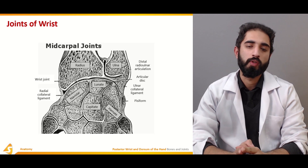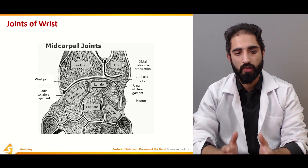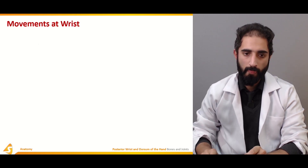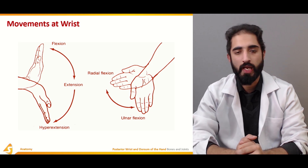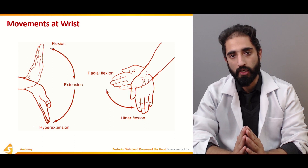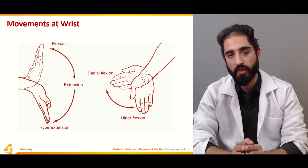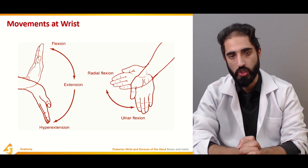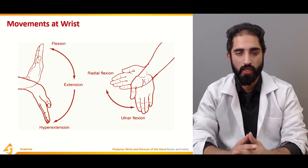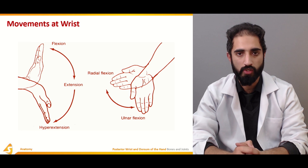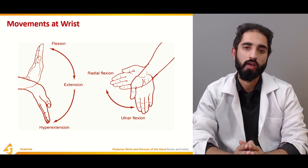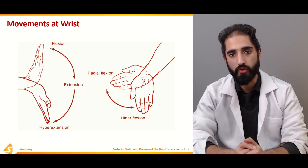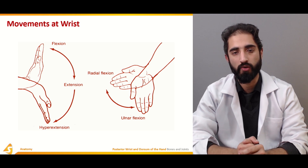The major joints at the wrist are the radiocarpal joint and the midcarpal joint. Movements possible at the wrist involve two degrees of freedom: flexion and extension in one degree, and ulnar and radial deviation in the other. Because of these two degrees of freedom, circumduction is also possible. The major movements occur at the radiocarpal joint, but the midcarpal joint enhances and complements them.